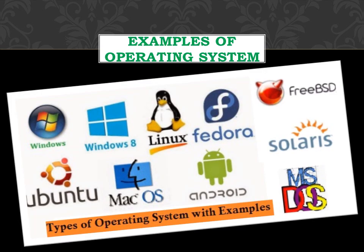Examples of an operating system: there are various types of operating systems available in the market. These include Windows, Windows 8, Linux, Fedora, Mac OS, Ubuntu, Android, FreeBSD, Solaris, and MS-DOS. These are all examples of operating systems.